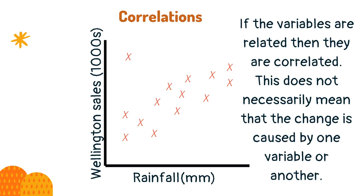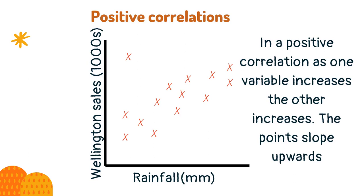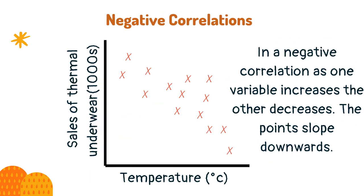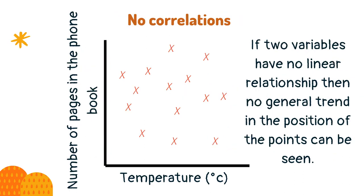If the variables are related then they are correlated. This does not necessarily mean that the change is caused by one variable or another. In a positive correlation, as one variable increases the other increases — the points slope upwards. In a negative correlation, as one variable increases the other decreases — the points slope downwards. If two variables have no linear relationship then no general trend in the position of the points can be seen.